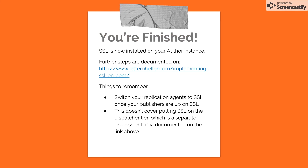This instance is finished. This is SSL just on the author — you need to redo those same steps on your publish tier; I've got further steps documented on my blog. Once you've got SSL working on your publish tier, make sure to switch your replication agents on the author to point to the SSL ports, not just the standard HTTP ones. Also, this doesn't cover putting SSL on the dispatcher tier, which is an entirely separate process — mostly just SSL on Apache, although there are a couple of other steps documented on the blog post as well.